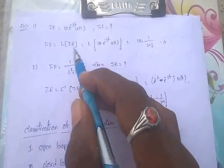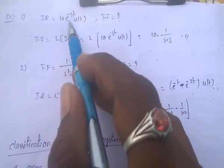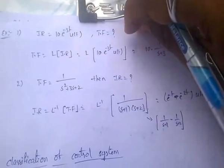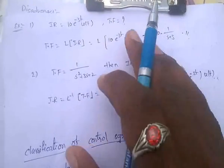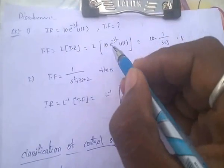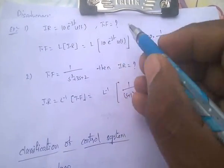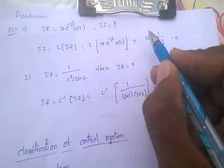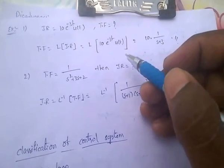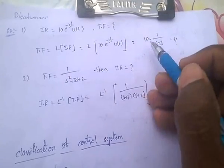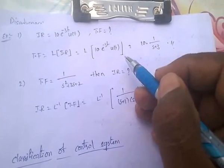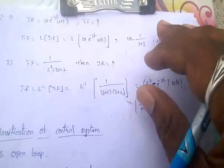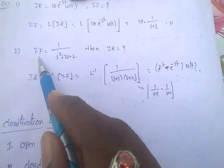For example: if the impulse response is given as 10·e^(−3t)·u(t), find the transfer function. Transfer function equals Laplace of impulse response, that is Laplace of 10·e^(−3t)·u(t). 10 is a constant, and Laplace of e^(−3t)·u(t) is 1/(s+3). So the transfer function is 10/(s+3). Laplace transform formulas are very important in control systems.